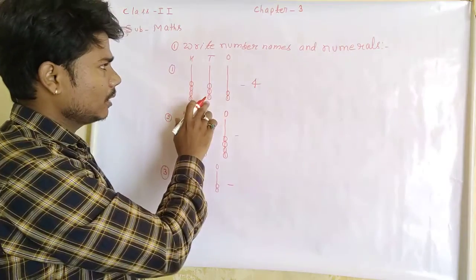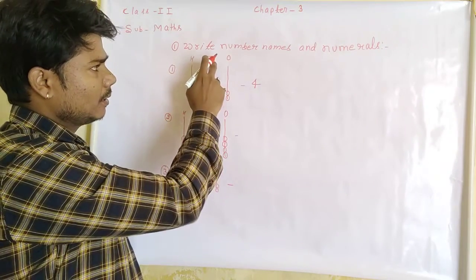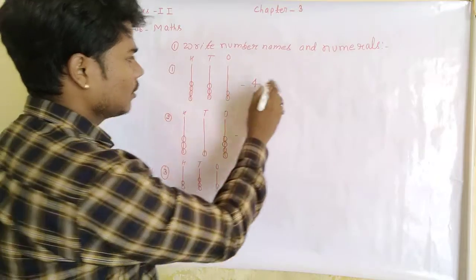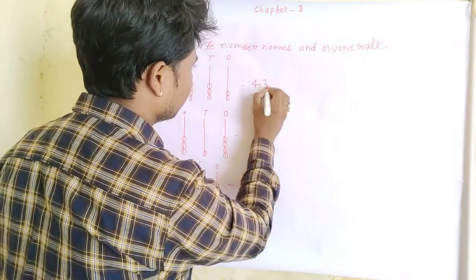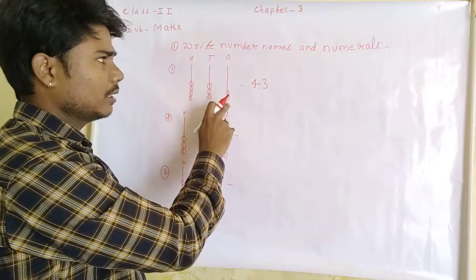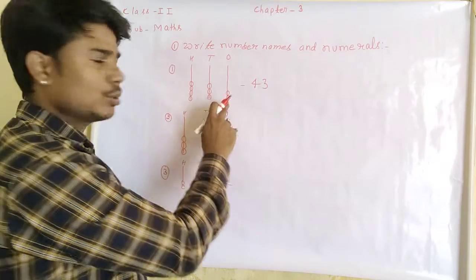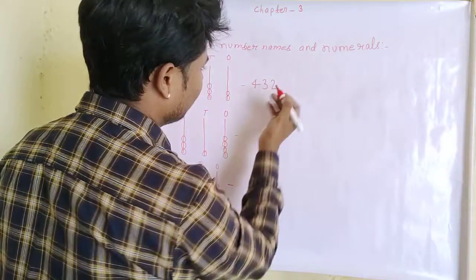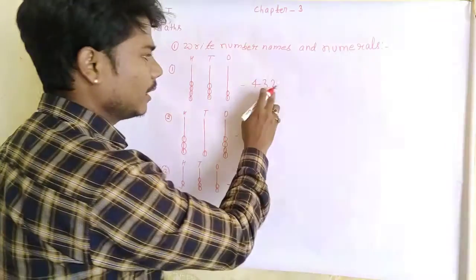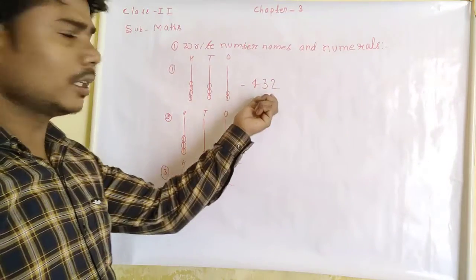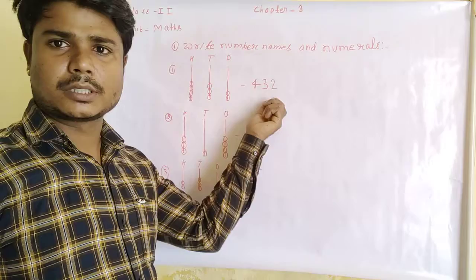How many circles in the tens place? 3. So write here 3. And how many circles in the ones place? 2. So, 432. This is what? Numerals.